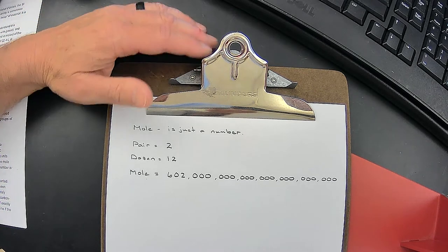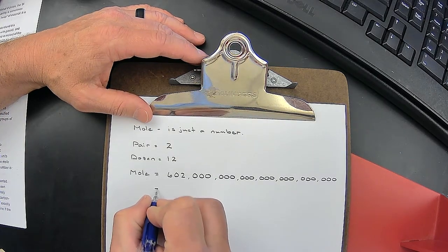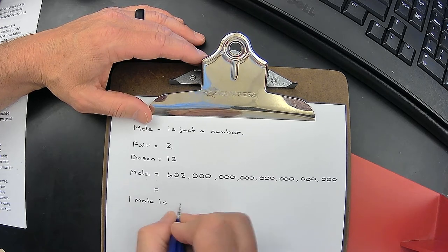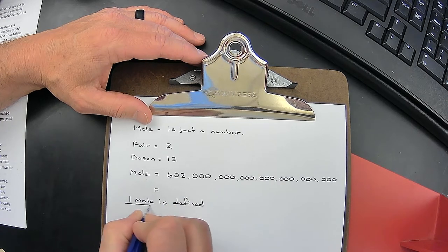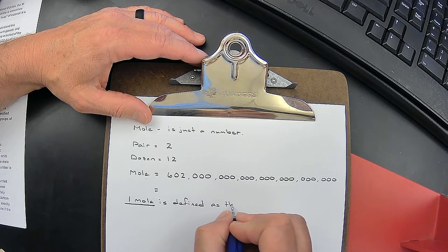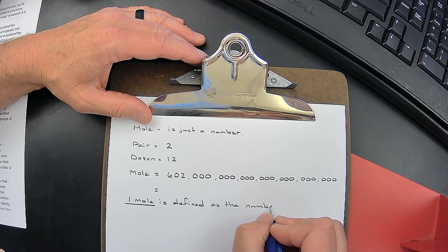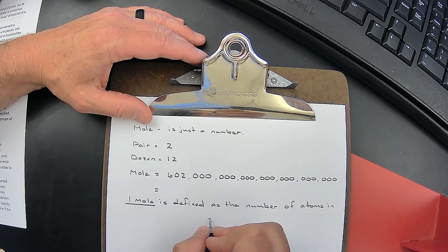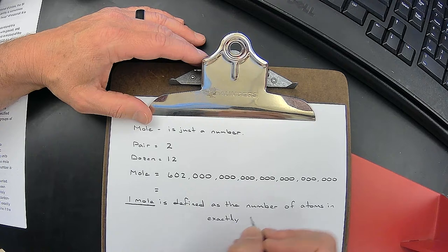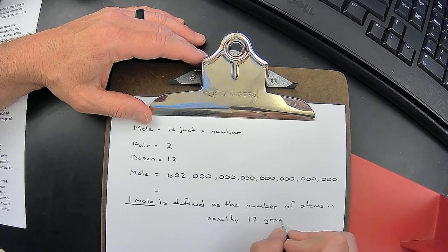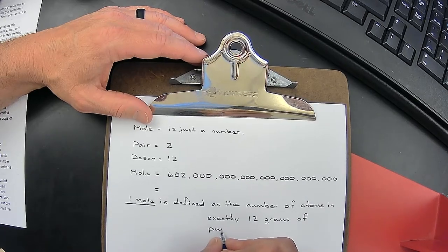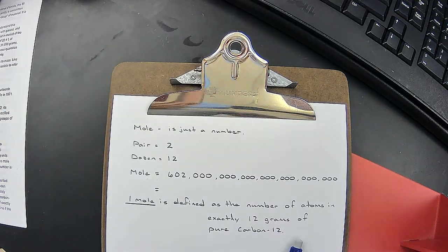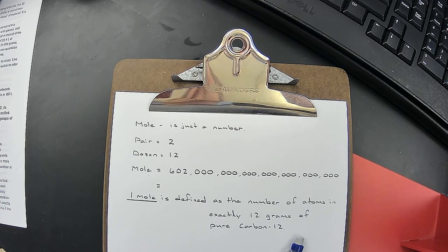This is where we get the formal definition. Here's what the formal definition is: One mole is defined as the number of atoms in exactly twelve grams of pure carbon-12. That is the definition of a mole.